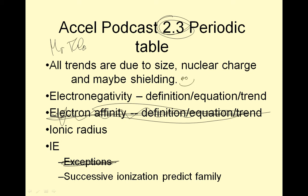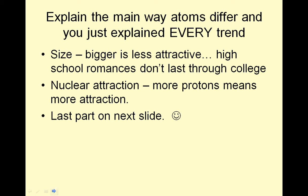Topics today: electronegativity — definition, equation, trend; ionic radius — what's the size of an ion; and ionization energy. We also talk about successive ionization to predict a family. Let's hop to it. Explain the way atoms differ and you've just explained every trend.